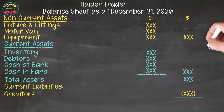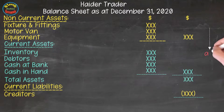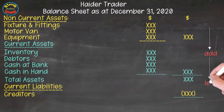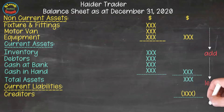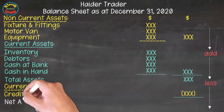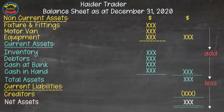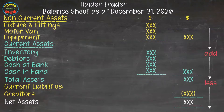In the balance sheet vertical format, we will add non-current assets with current assets to get total assets. From total assets, we will subtract current liabilities to get net assets. This is the first portion of the balance sheet. Under this portion, we will draw the capital working. Let's see in the next slide.